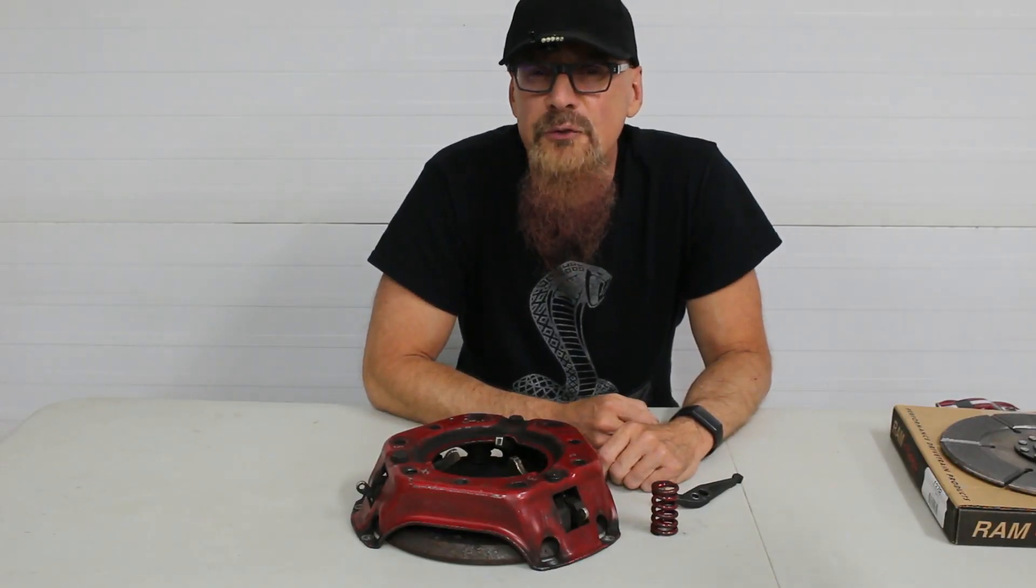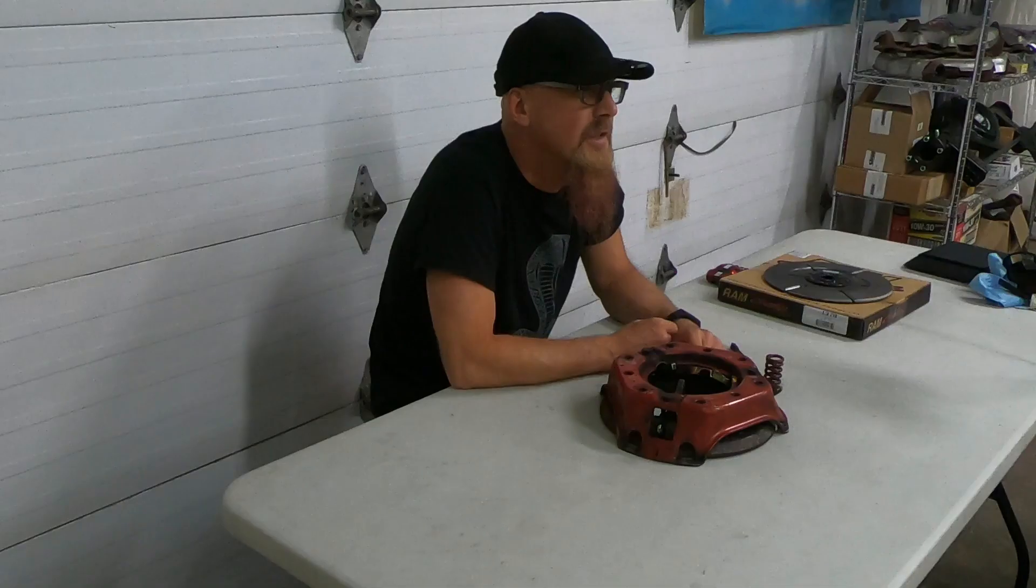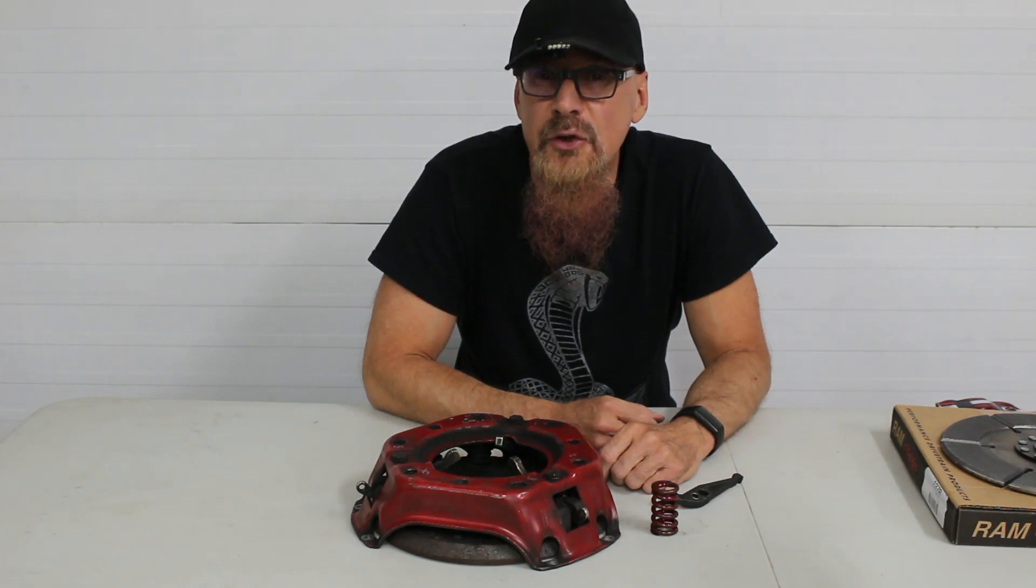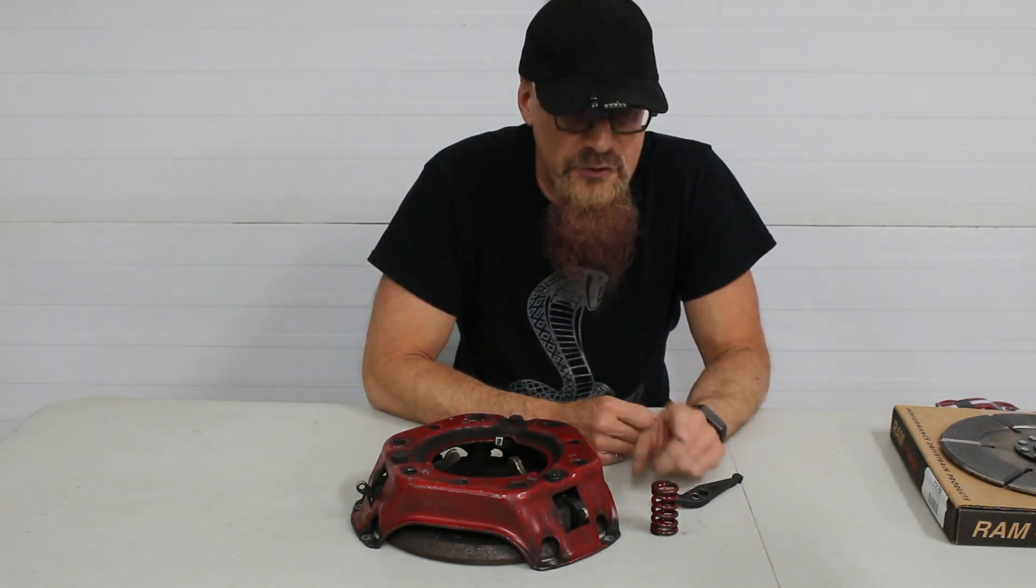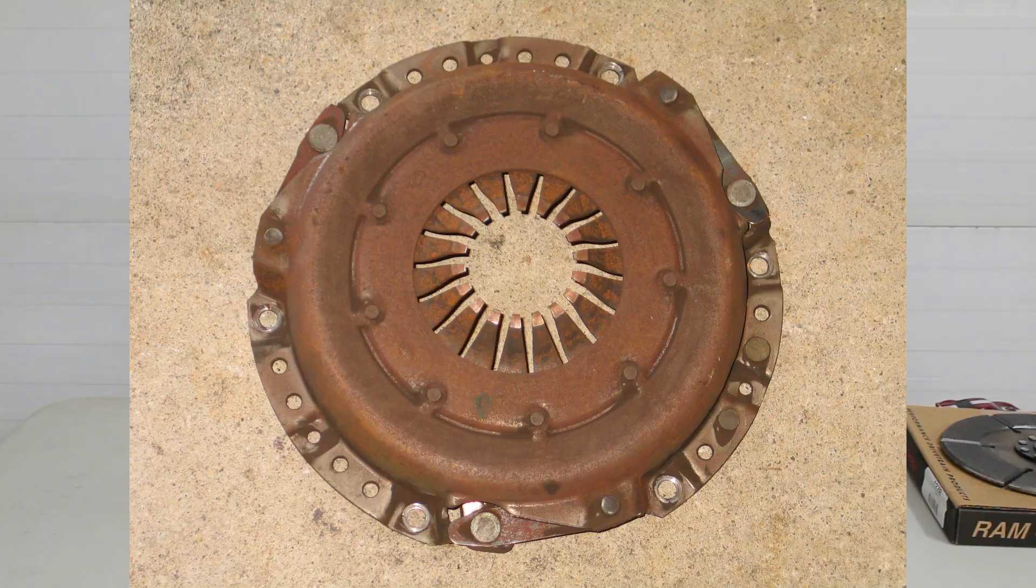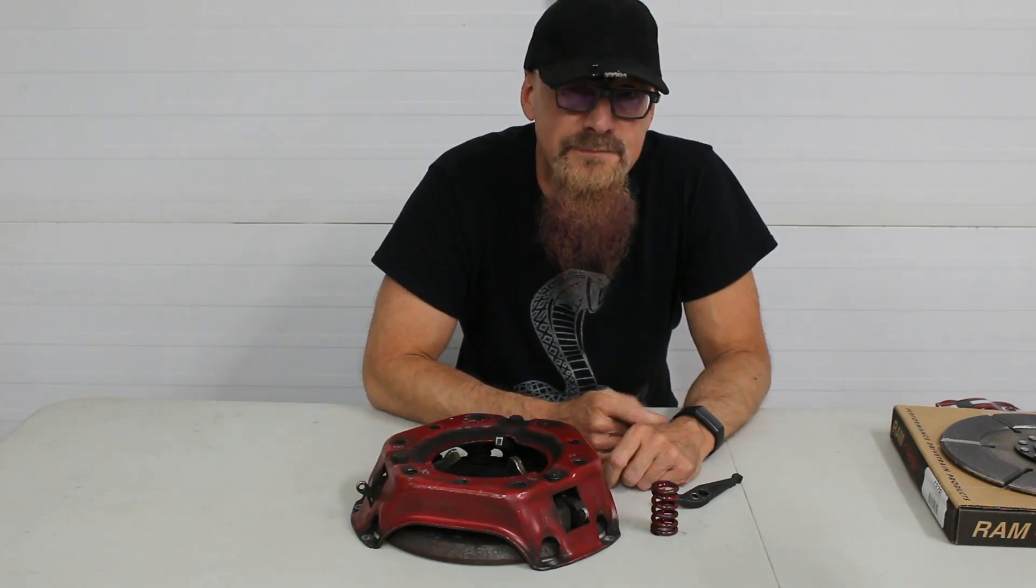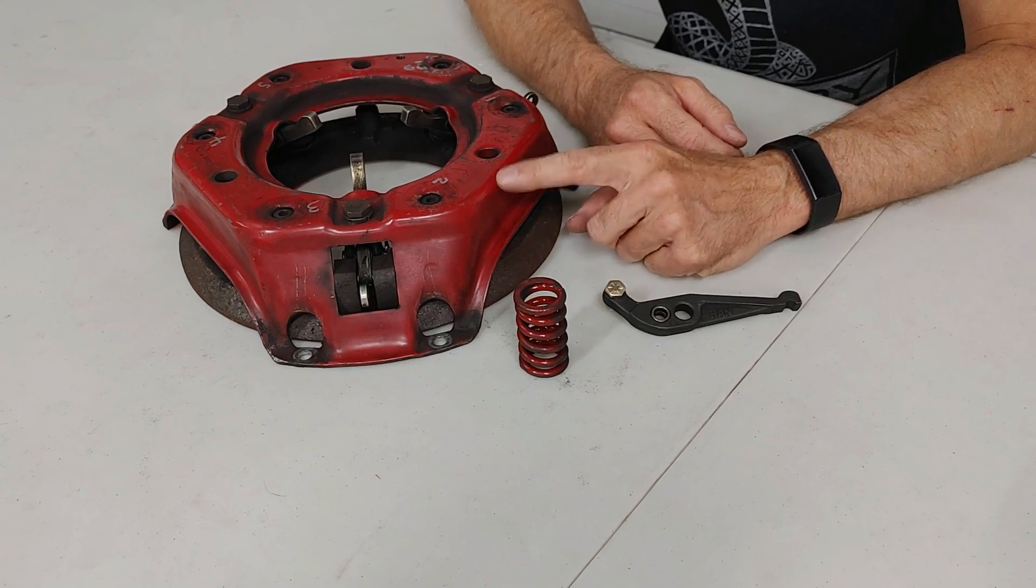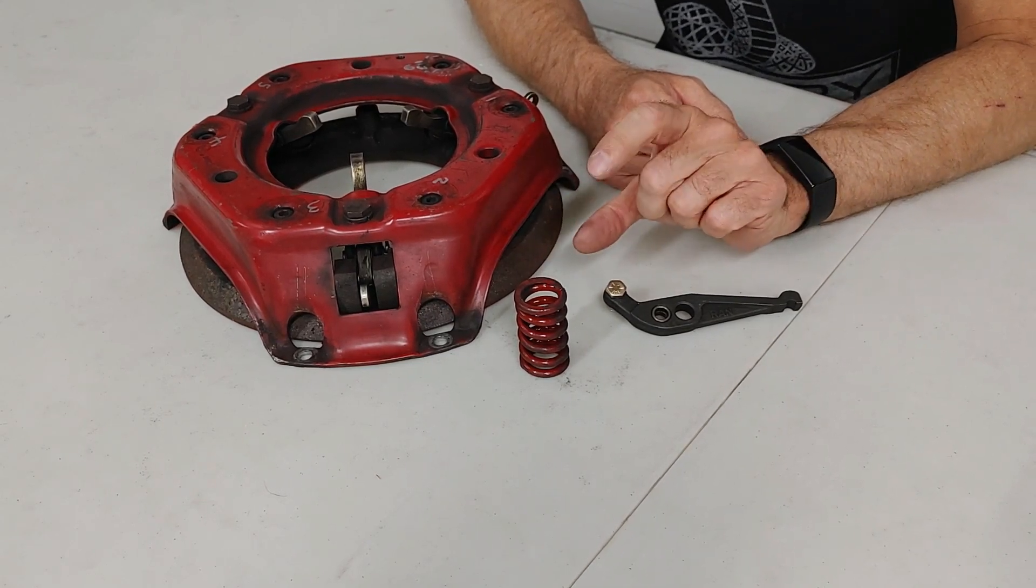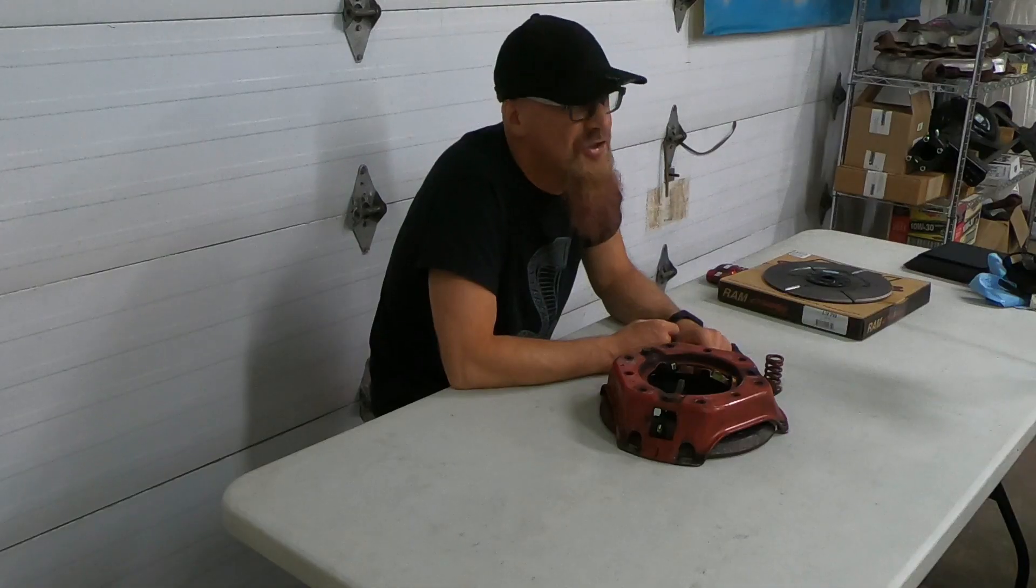First let's talk about clamping force. Clamping force comes from two sources. Static spring force, and secondly centrifugal force developed by the release levers. The static force comes from coil springs or in the case of a diaphragm clutch the single Belleville spring which is kind of like a big conical washer. The amount of force we get is dependent on the spring rate, the number of springs we've got in the clutch, this one's got six, and how far we compress the spring. The static force doesn't, well it shouldn't, change with RPM.